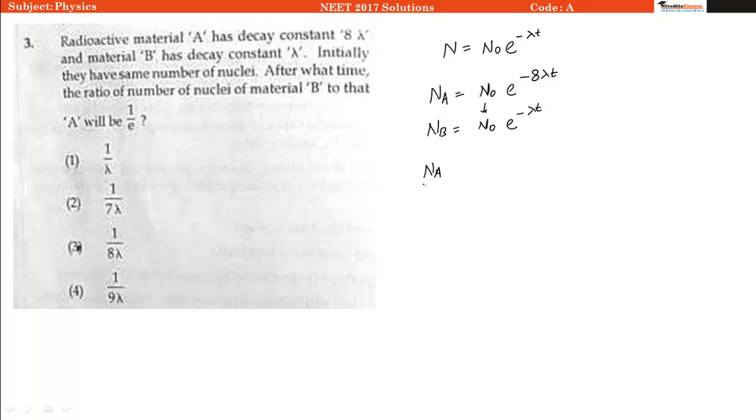If we take the ratio N_A divided by N_B, it will equal N naught e raise to power minus 8 lambda t divided by N naught e raise to power minus lambda t.